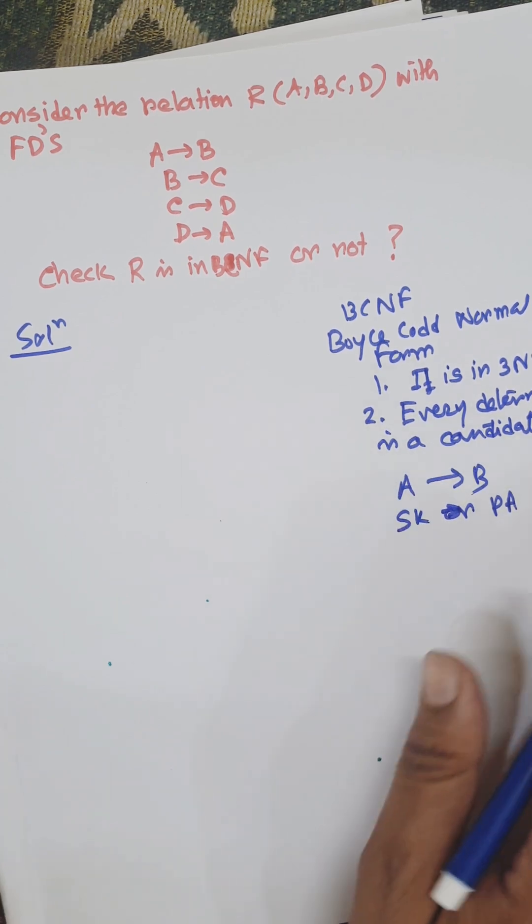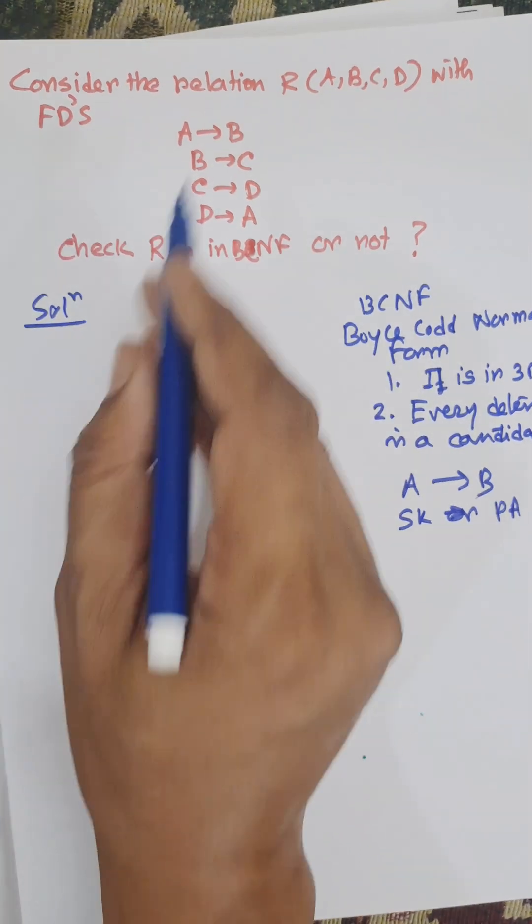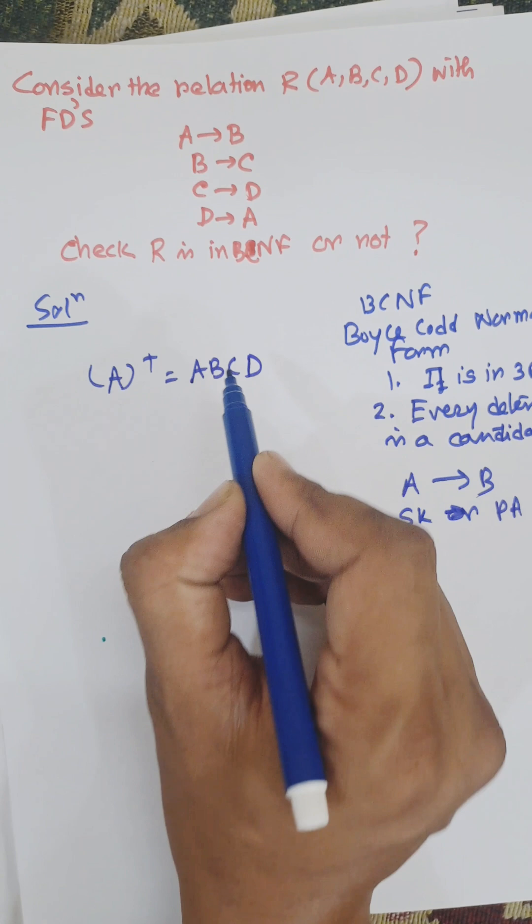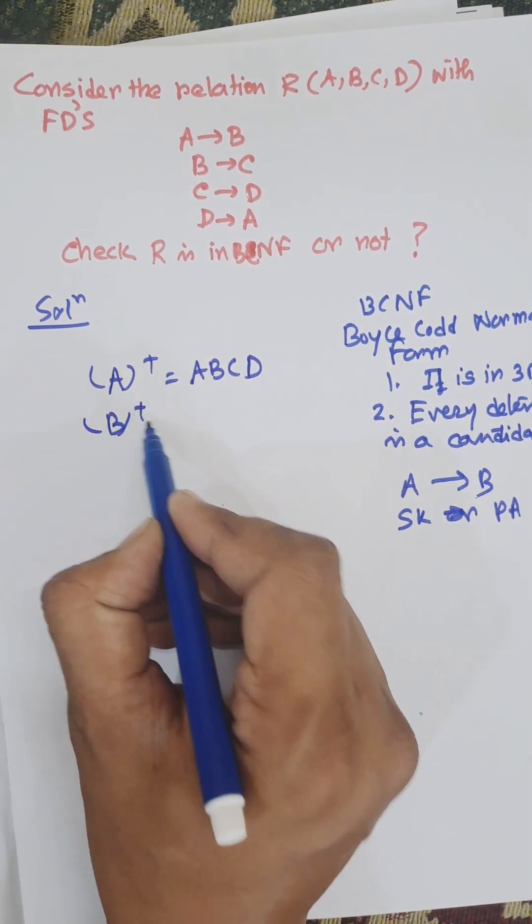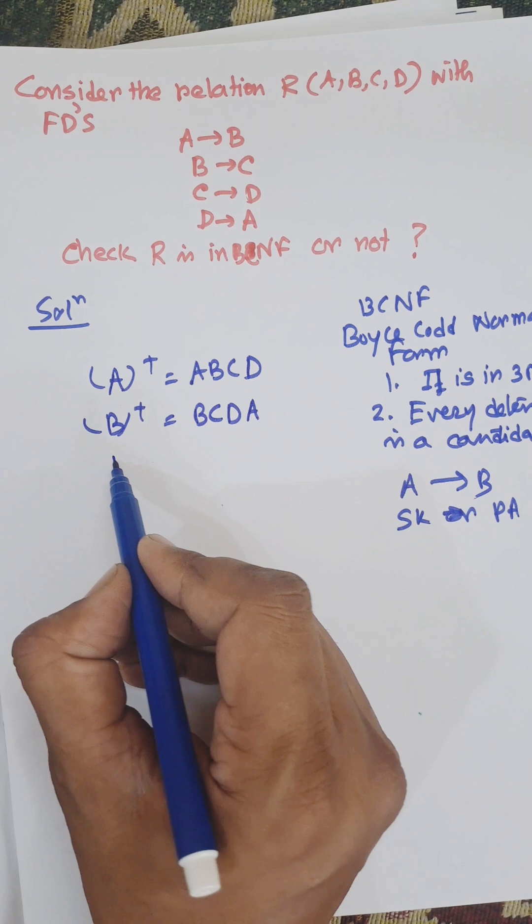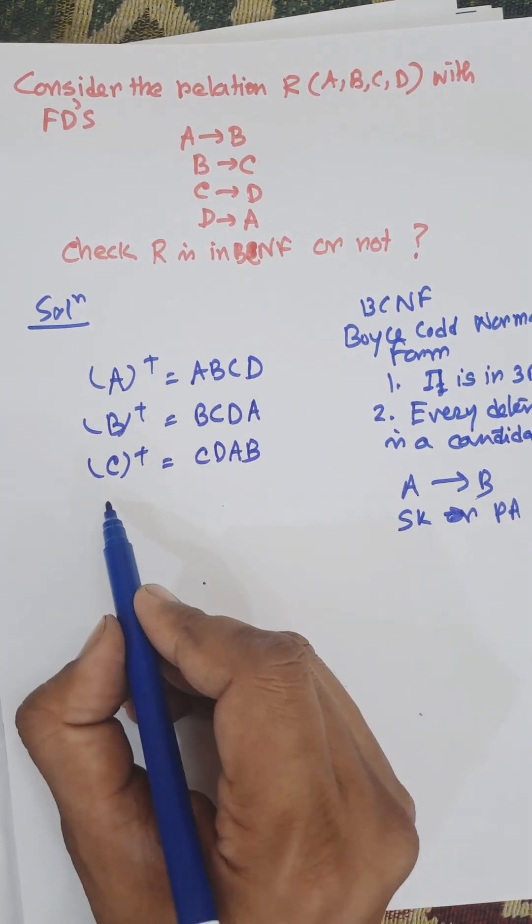Let us consider the FDs. A+ (closure of A) equals ABCD. B+ equals BCDA. C+ equals CDAB. D+ equals DABC.